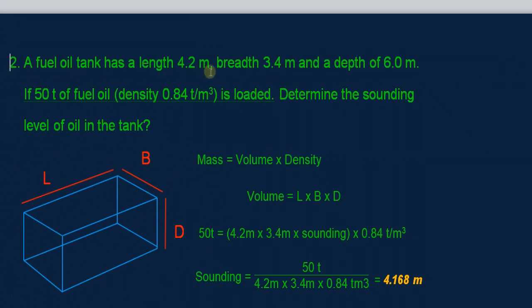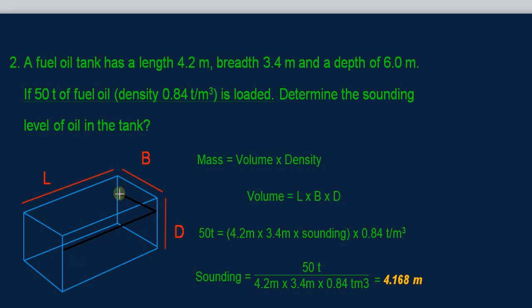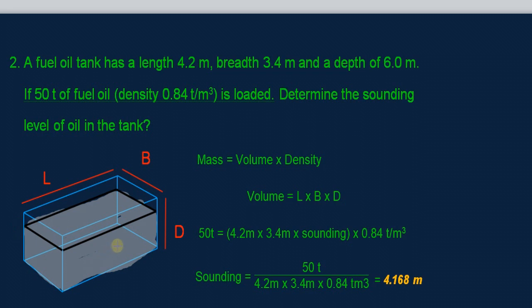Problem number two: a fuel oil tank has a length of 4.2 meters, a breadth of 3.4 meters and a depth of 6.0 meters. If 50 tons of fuel oil with a density of 0.84 tons per cubic meter is loaded to the tank, determine the sounding level of the oil in the tank. The sounding is the vertical distance from the tank top to the level of fuel oil inside the tank.